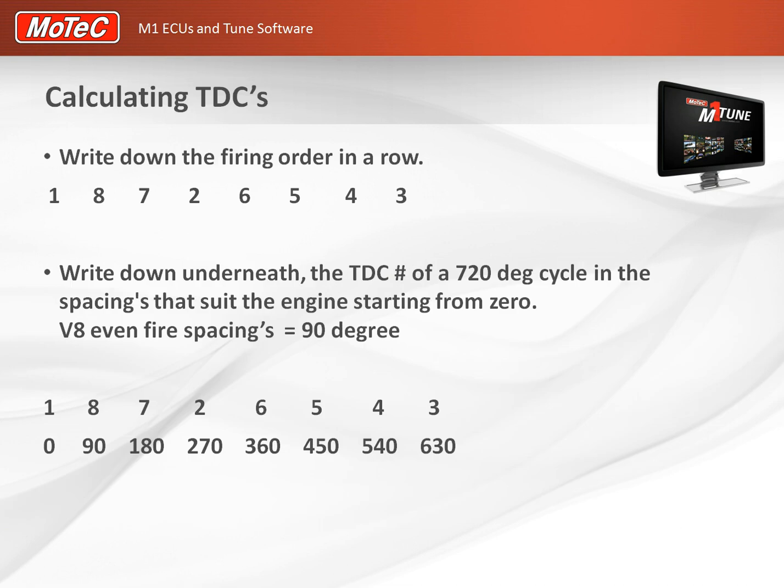Next, write down your firing order. For the LS style engines it's 1, 8, 7, 2, 6, 5, 4, 3. Write that down on a whiteboard or a piece of paper in front of you so you can write some numbers down underneath.